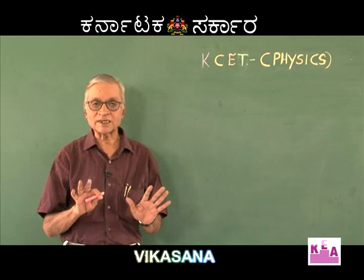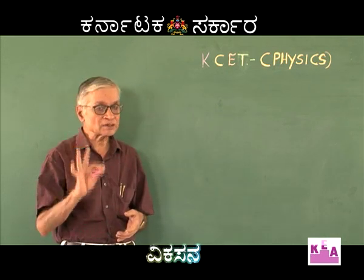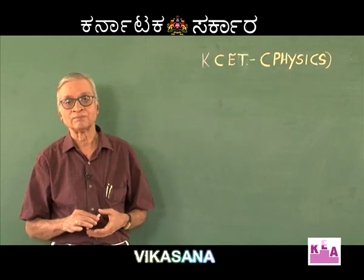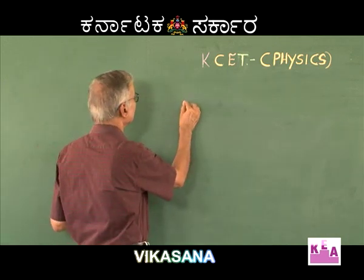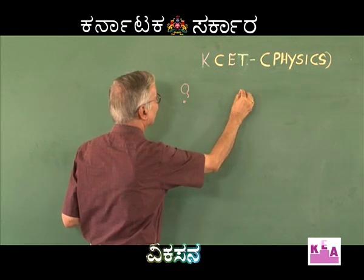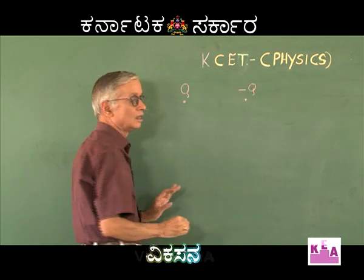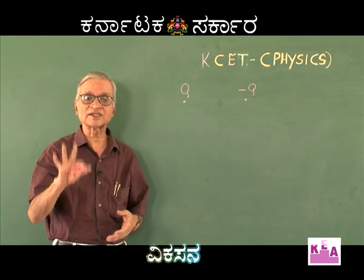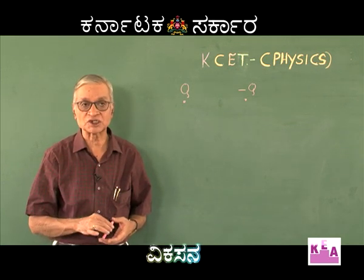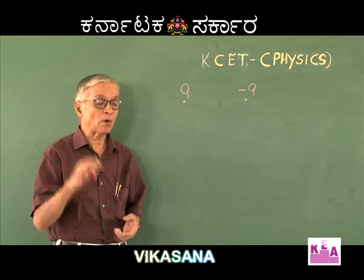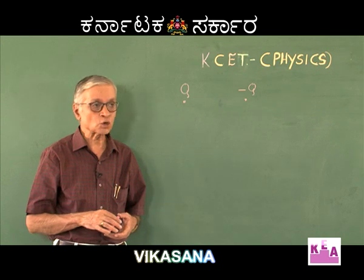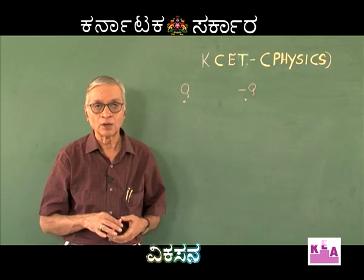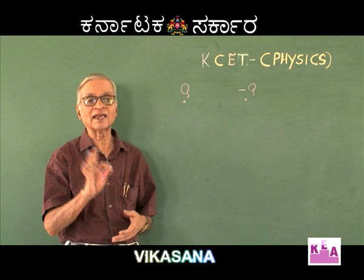Look here, the concept is very simple, but there is every possibility that you may misunderstand the concept and end up with a wrong answer. The question involves a charge Q and another charge minus Q. A third charge is placed at different positions and we have to identify the point where the force is zero. Please note that the force on the charge is zero when the electric intensity is zero. Hence, we have to identify the point where the electric intensity is zero.